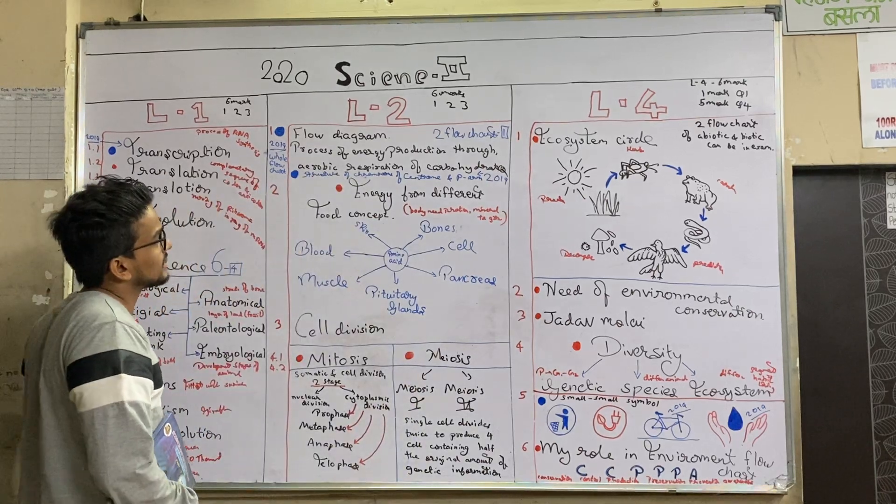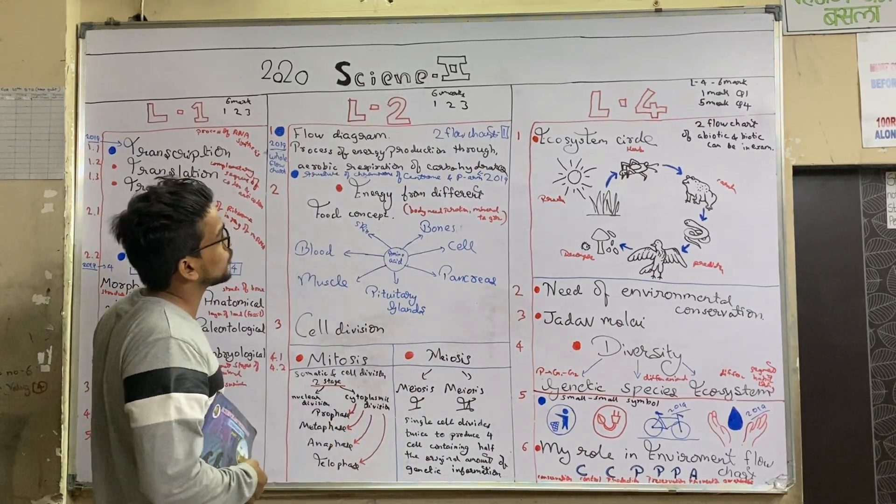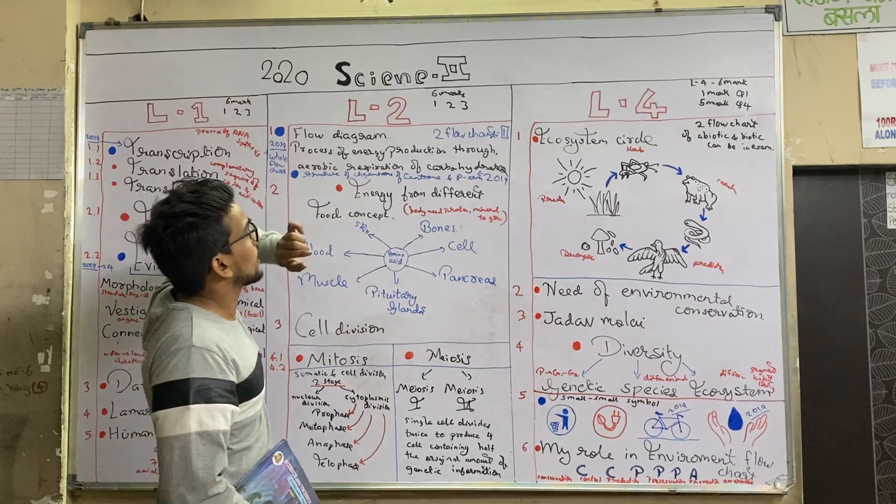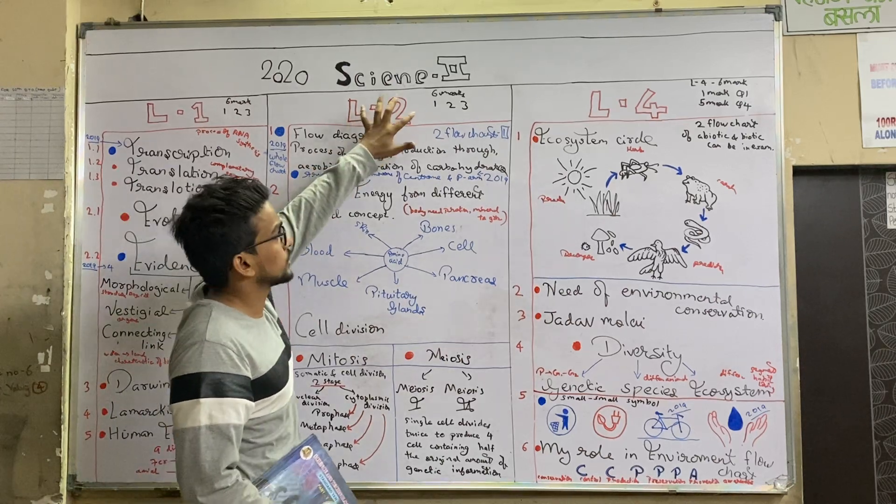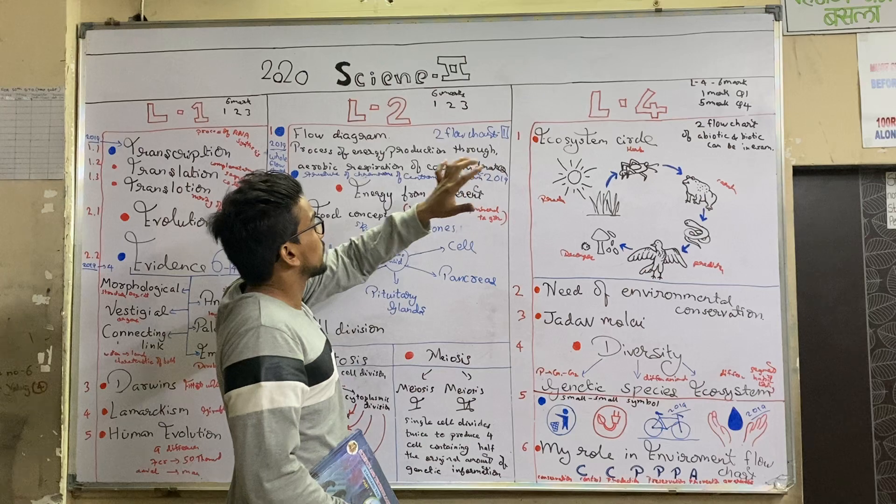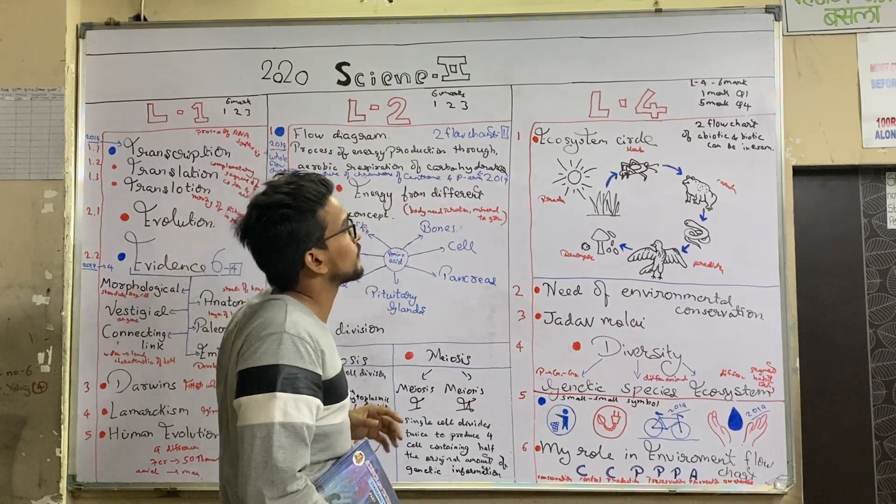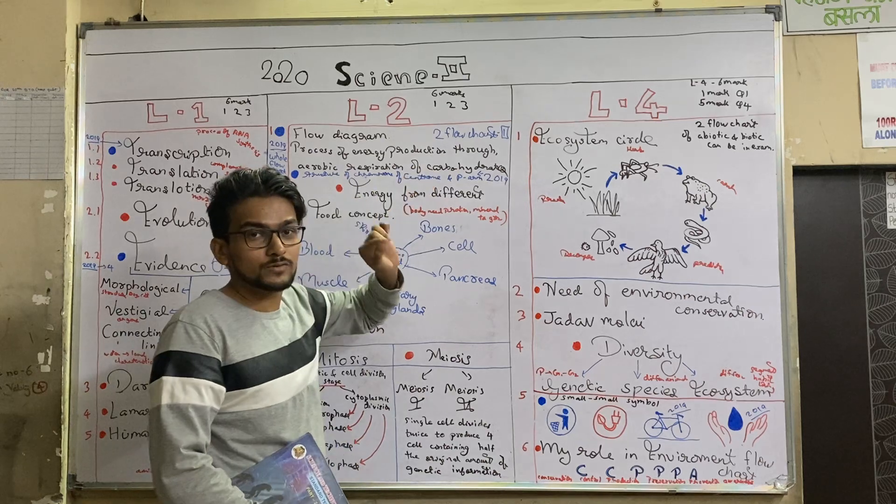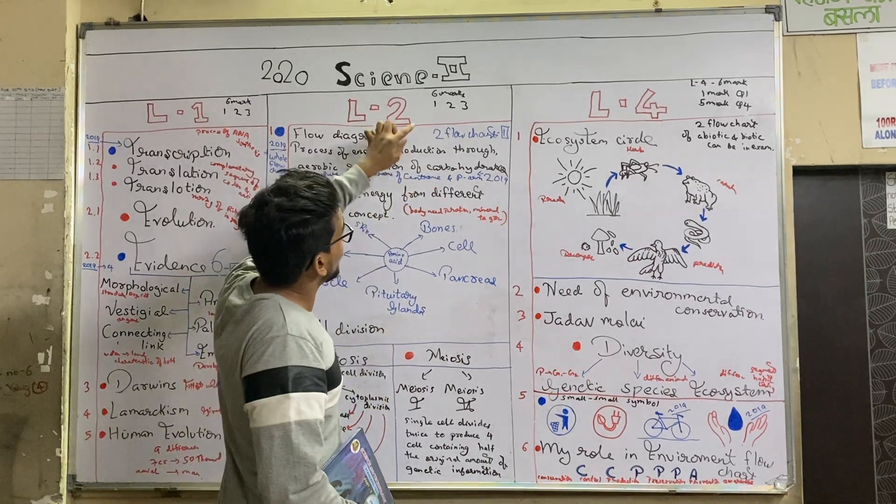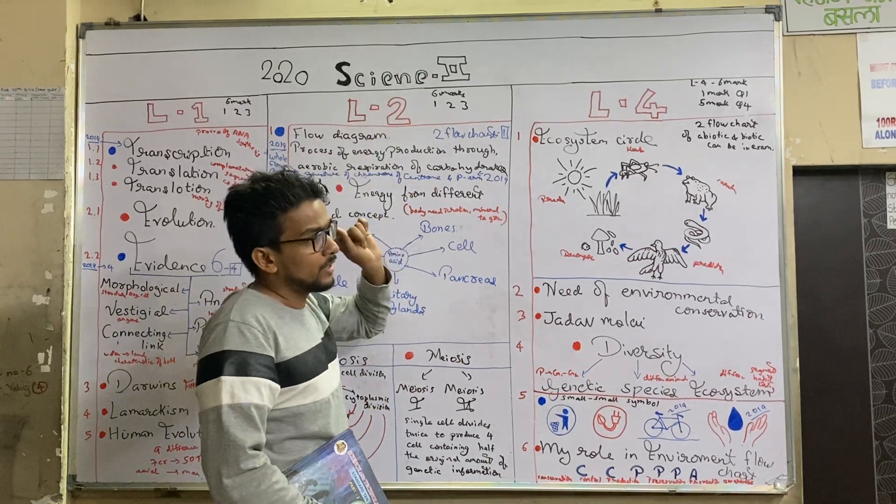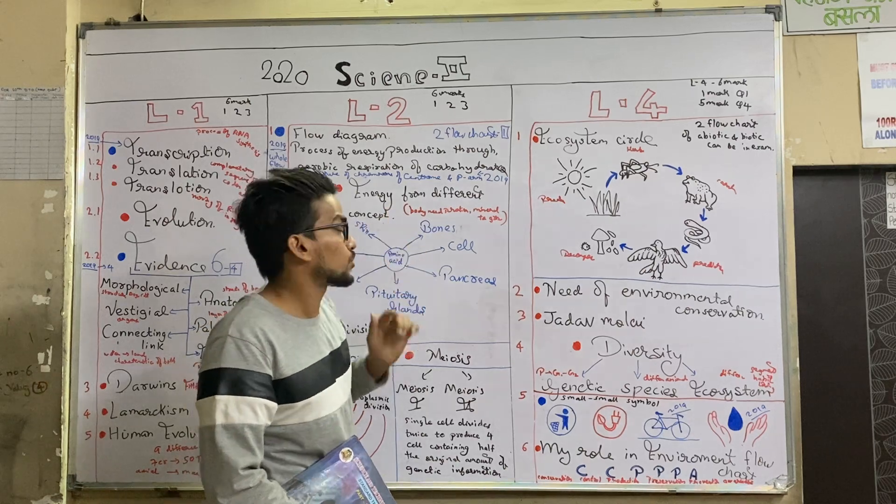Okay, let us see lesson number 2 from your science part 2. First of all, we begin with lesson number 2, see the weightage of this lesson. The weightage of lesson number 1 is 6, lesson number 2 is 6, lesson number 4 is 6. So this weightage is of the last board exam. The weightage 6 includes your 1 mark, 2 mark, 3 marks and the total is 6.